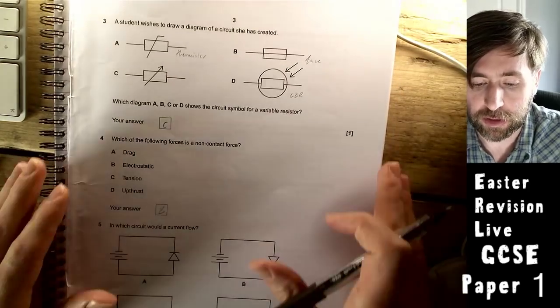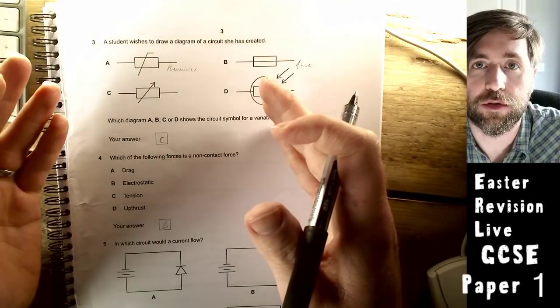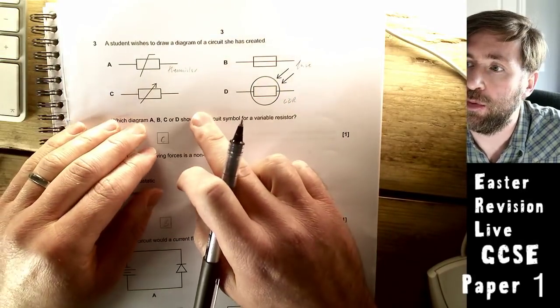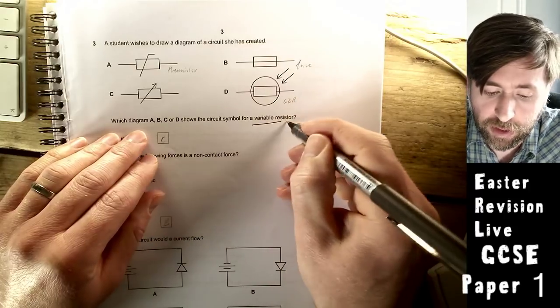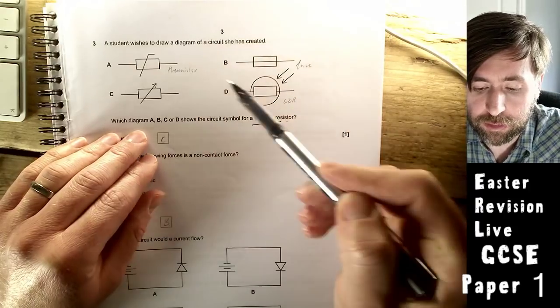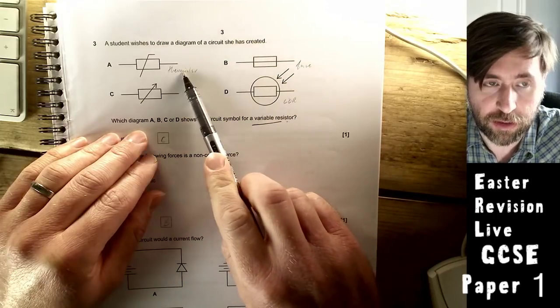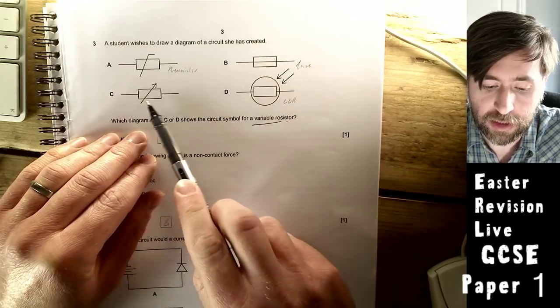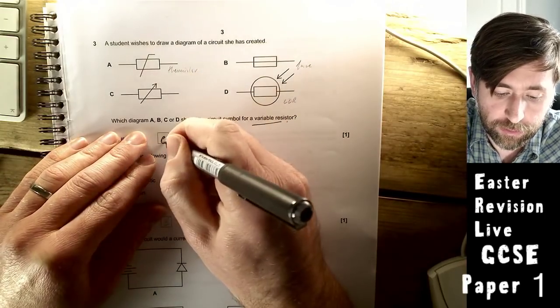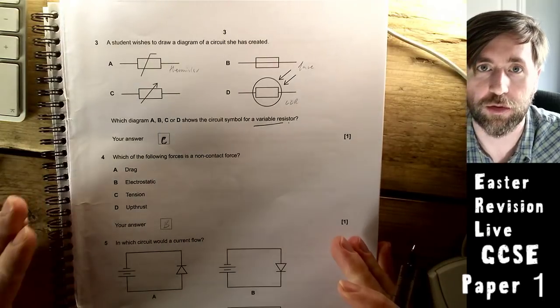Student wishes to draw a diagram of a circuit they've created. This is just do you know your circuit symbols. Which one shows a variable resistor? They're all resistances that can change. This is a fuse, this is a thermistor that's kind of upside down, this is an LDR. So it's this one, C. Make sure you memorize your circuit symbols, just spend a few minutes.